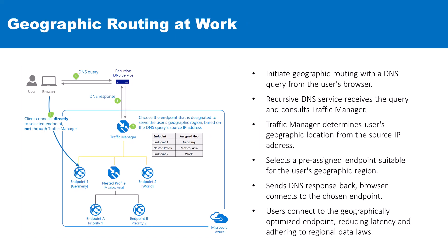Here we have the geographic routing method. A user begins the process by issuing a DNS query through their browser. The query gets picked up by a recursive DNS service, which then seeks guidance from Traffic Manager. Traffic Manager uses the source IP address of the DNS query to determine the user's geographic location.